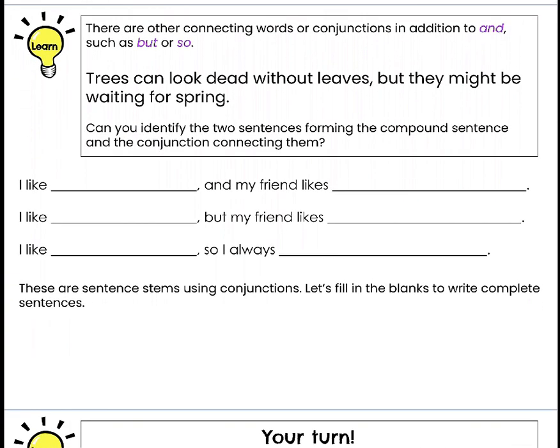There are other connecting words or conjunctions in addition to AND, such as BUT or SO. To combine two sentences we can use the word AND, we could also use the word BUT, or we could use the word SO. Those are connecting words or conjunctions — they both mean the same thing. Our goal is to learn the word conjunctions because it makes it sound very smart.